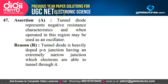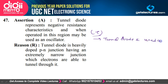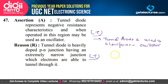Question 47: Tunnel diode represents negative resistance characteristics and, when operated in that region, may be used as an oscillator — absolutely true; it is basically a low-power oscillator. The tunnel diode is a heavily doped PN junction having an extremely narrow junction through which electrons tunnel. This is the main reason it can be used as an oscillator — option A is correct.